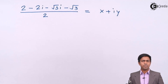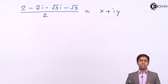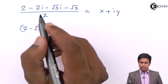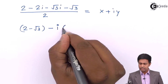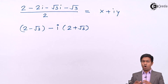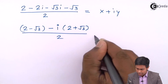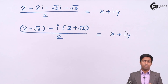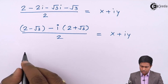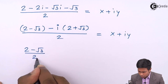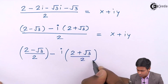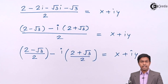From the numerator, we take real parts together and imaginary parts together. The real parts are 2 and -√3 (no i), giving (2 - √3). The imaginary parts share a factor of -i, giving -i(2 + √3). Since the denominator is now only the real number 2, we divide each part separately: the result is (2 - √3)/2 - i·(2 + √3)/2, which equals x + iy.